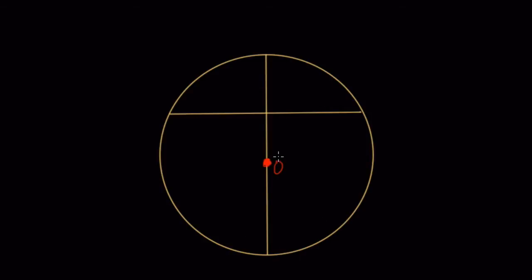In this problem, we're given a circle, circle O, and that means the center of the circle is point O, and we're given the diameter, AB.